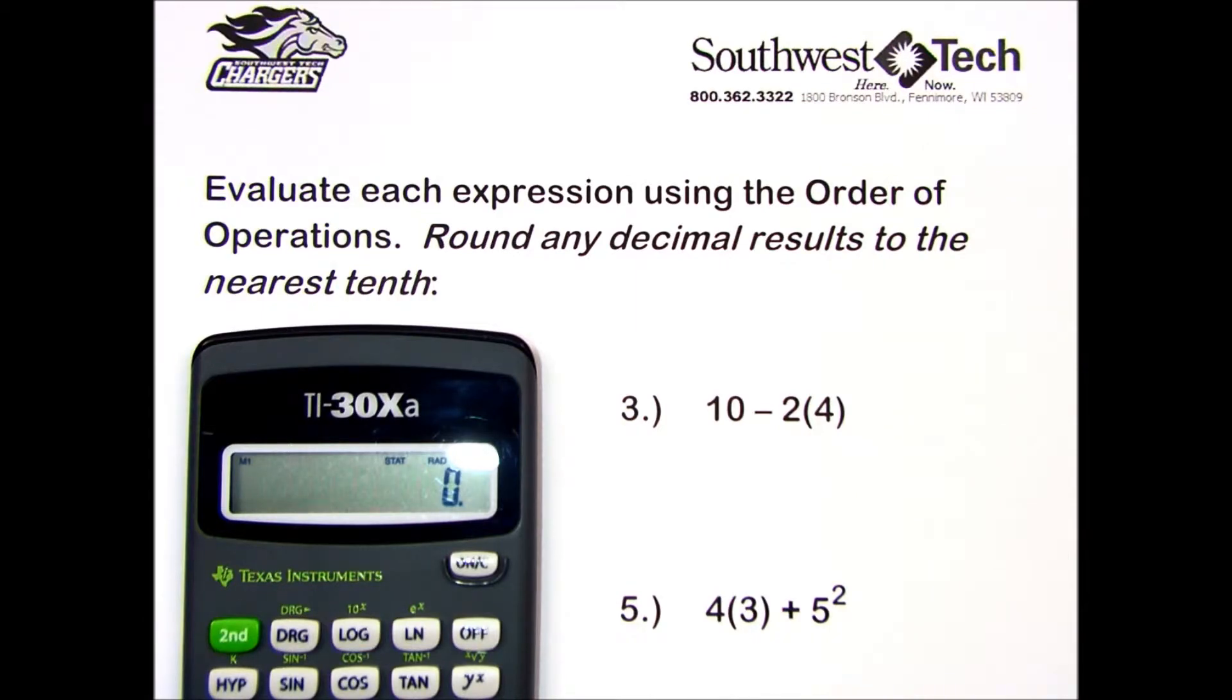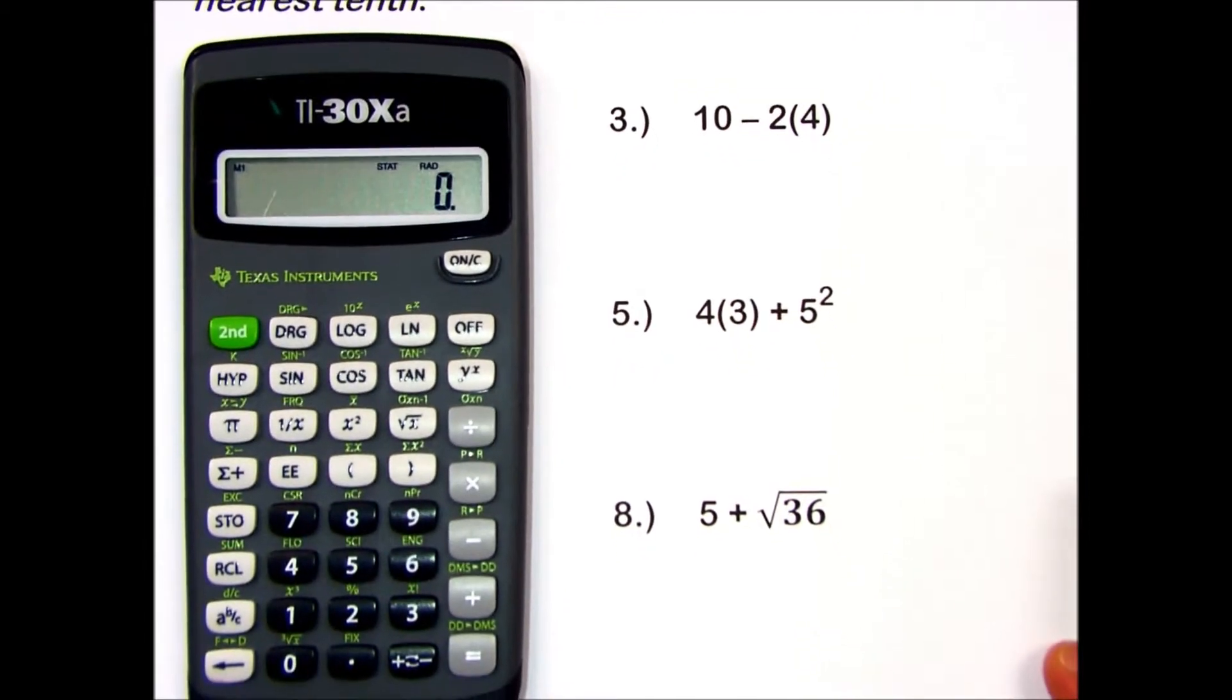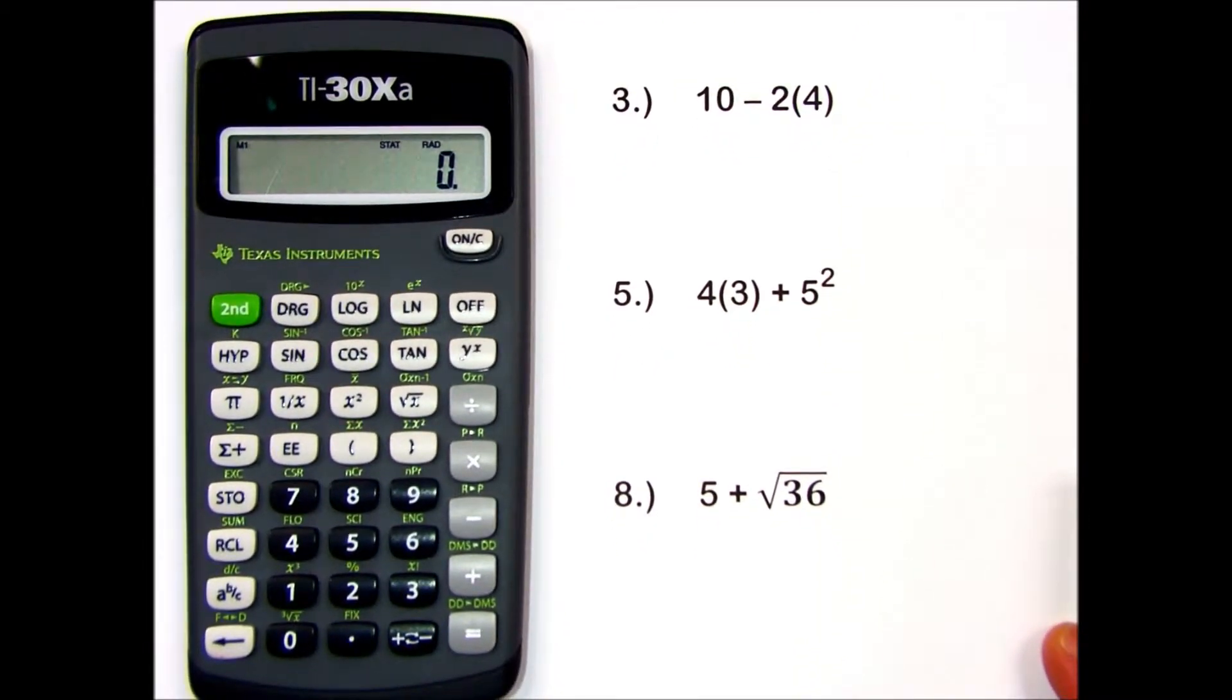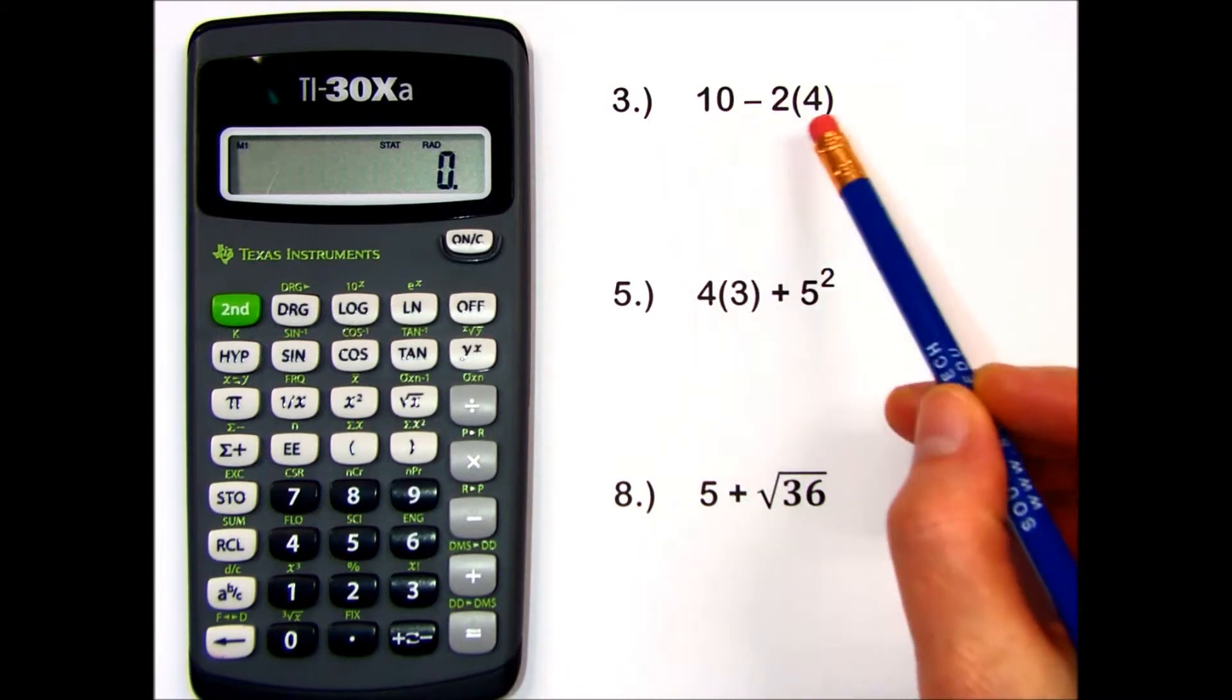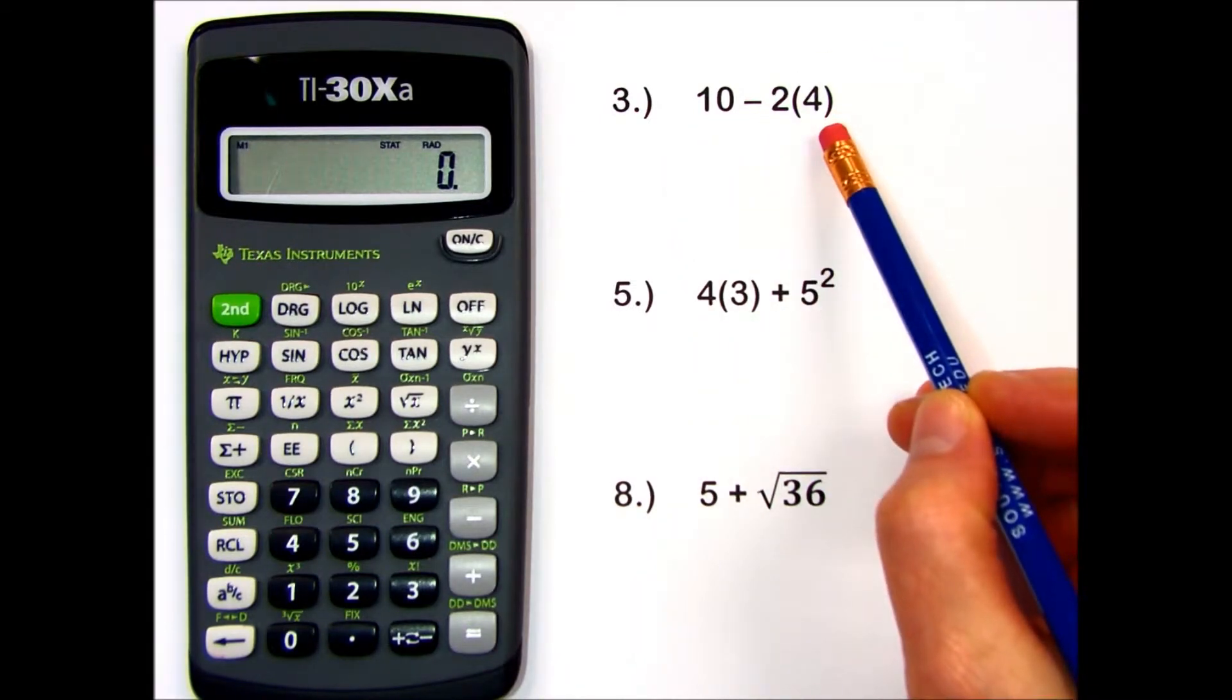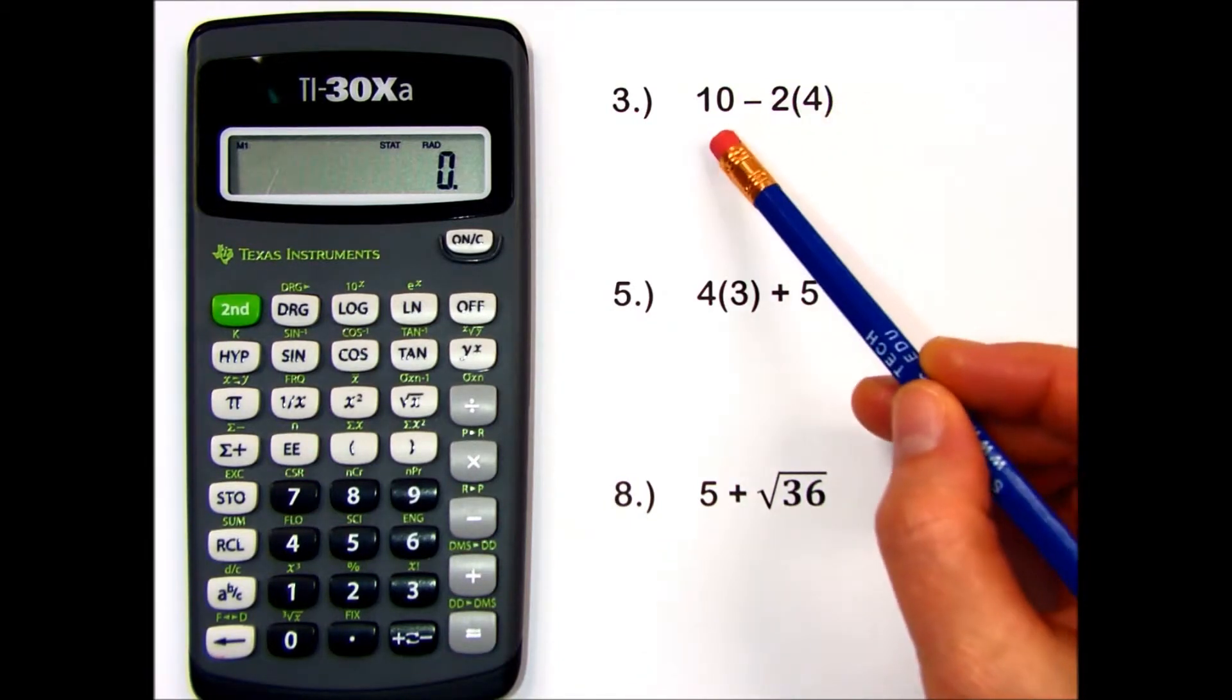Let's see how to do number 3 together. We can usually key the problem straight in as it appears because the scientific calculator does know the order of operations. So let's try this one.